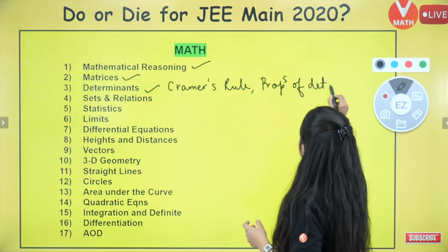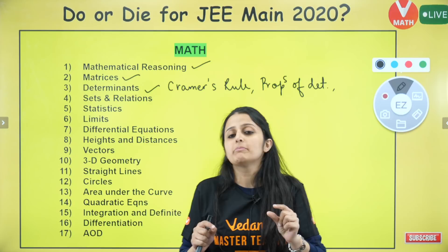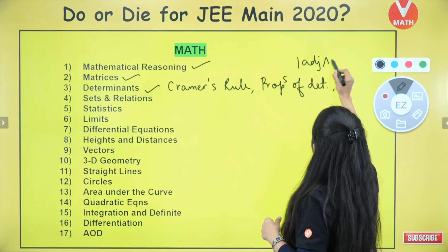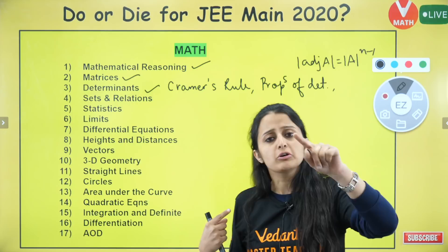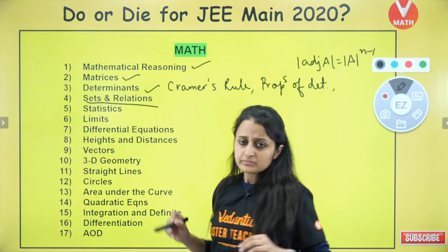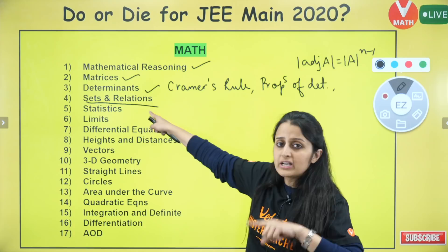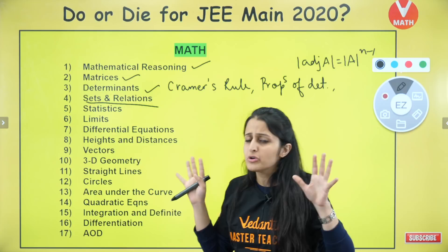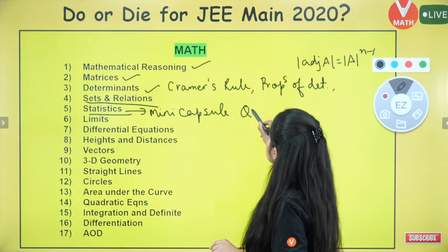In matrices, my super revision series for JEE Main preparation covers little properties — for example, determinant of adjoint A equals determinant of A raised to power n−1. You can search 'super revision JEE Main matrices and determinants.' For sets and relations, very standard type questions — if you have your 11th NCERT and past year questions, you are sorted. For statistics, see my mini capsule titled 'quick revision.'